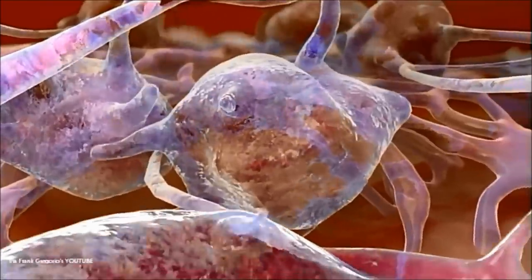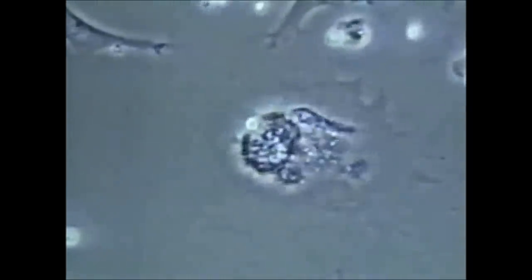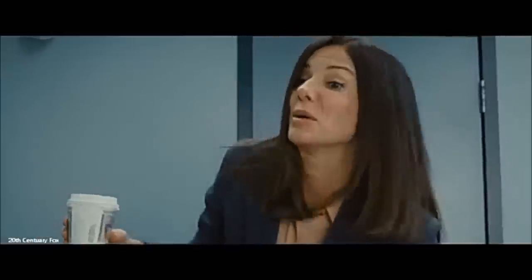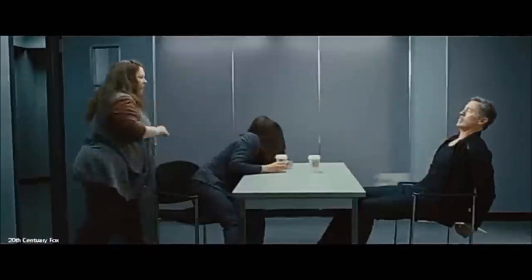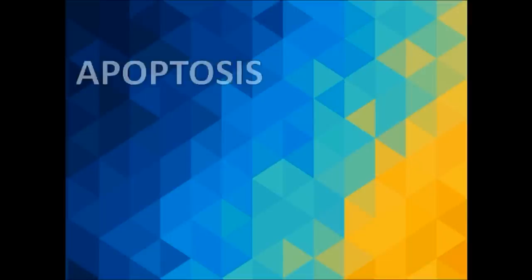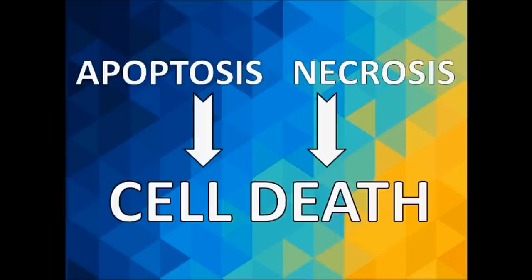Between 50 and 70 billion cells in your body die every day from both natural and pathogenic causes. There are two main mechanisms of cell death: apoptosis, the good cop, and necrosis, the bad cop. Both share the same end goal — cell death — but how they go about it varies considerably and will be the focus of this video.